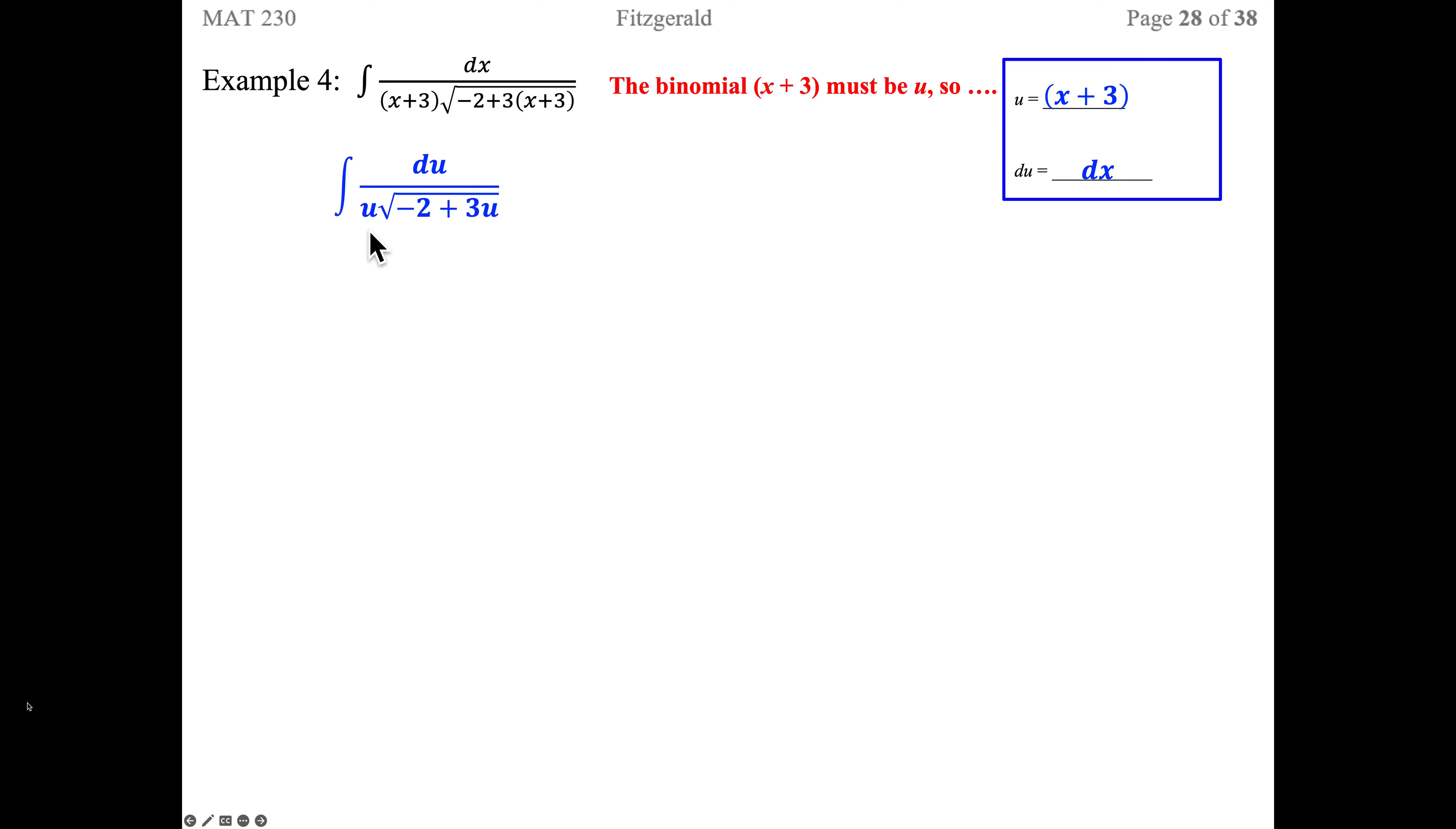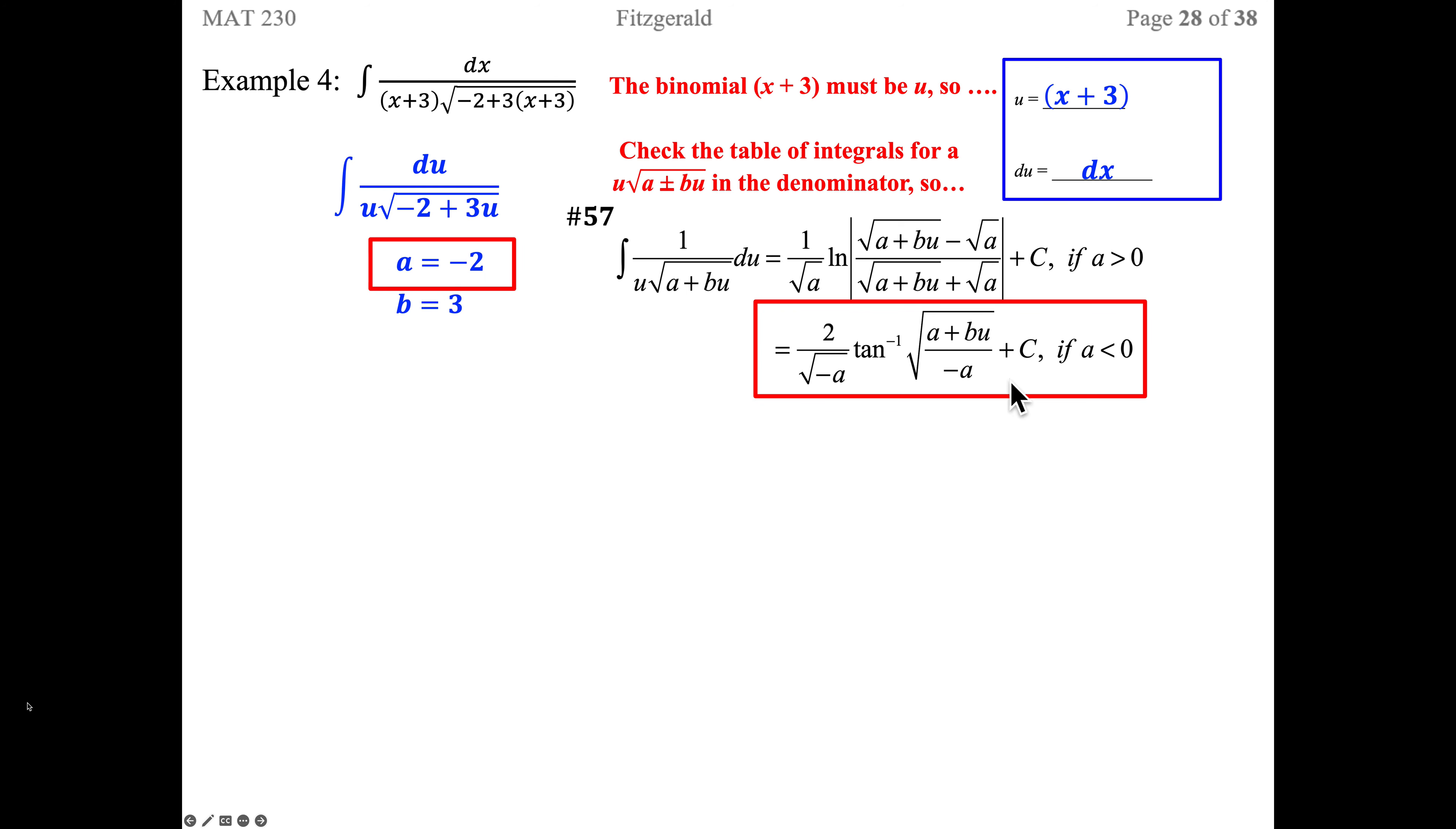Now we're looking on our table for a U times the square root of A plus BU in the denominator. That's at number 57, and 57 has a special case. There are two possible answers depending on the A value. If A is positive, we use this answer. If A is negative, we use this answer. Since we declared A to be negative 2 and B is 3, we're going to use this form of the answer.